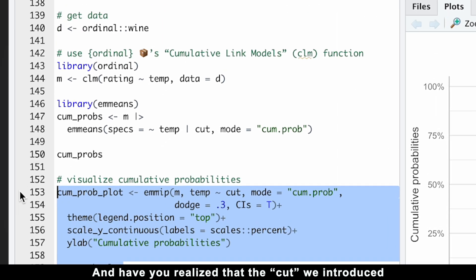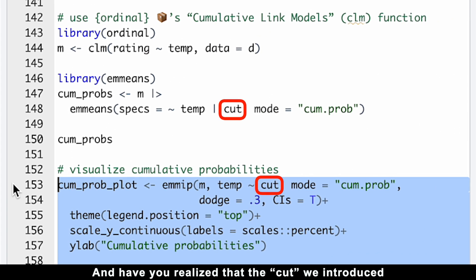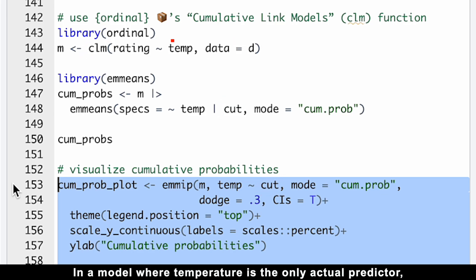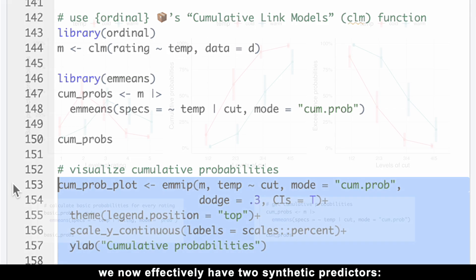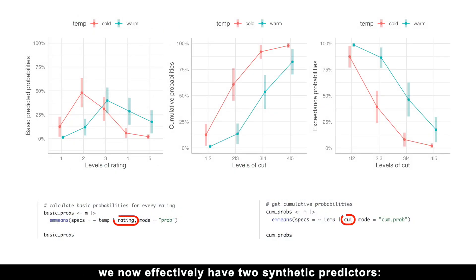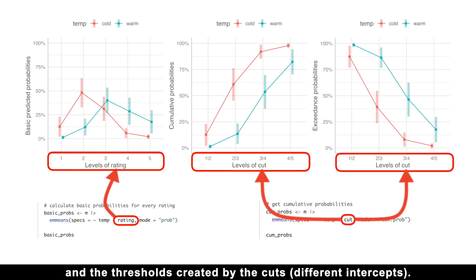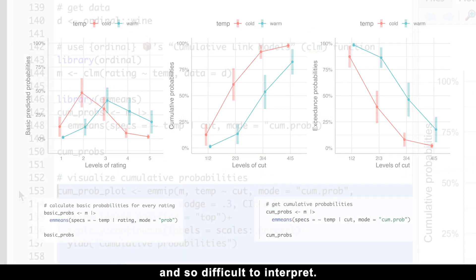And have you realized that the cut we introduced acts as another synthetic predictor, even though it wasn't explicitly part of our original model formula? In a model where temperature is the only actual predictor, we now effectively have two synthetic predictors: the outcome rating and the thresholds created by the cuts, or different intercepts. This shows why ordinal models are so complex and so difficult to interpret.